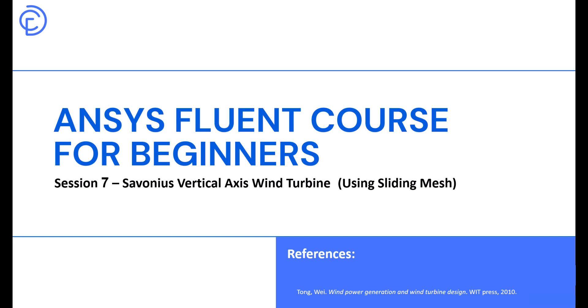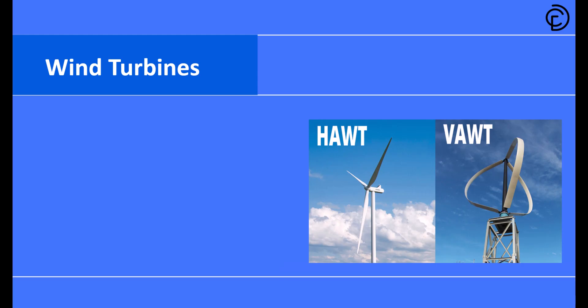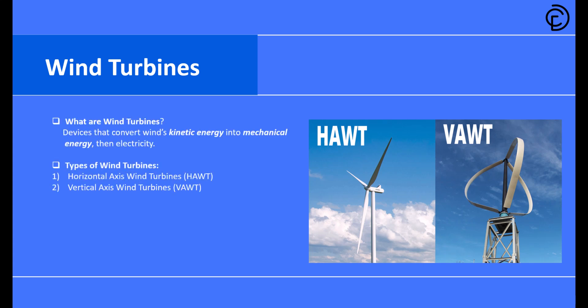Hello everyone, welcome to session 7 of our ANSYS Fluent course for beginners. Today we're going to explore Savonius vertical axis wind turbines. This is going to be an exciting session where we'll learn how to simulate these types of wind turbines using ANSYS Fluent. Throughout this tutorial we'll be working with advanced CFD concepts like sliding mesh interfaces, and you'll learn how to create animations of your results. We'll break everything down into manageable steps.